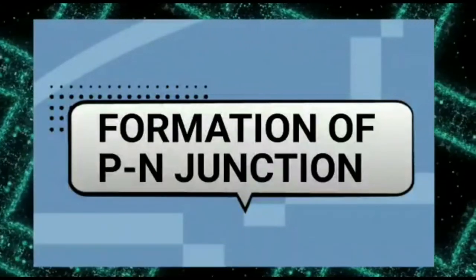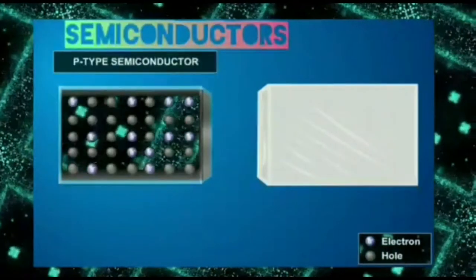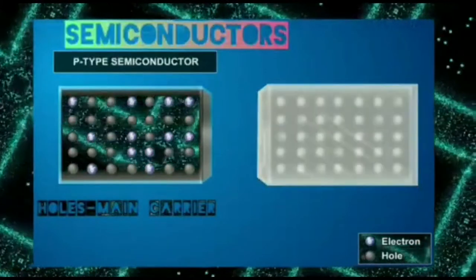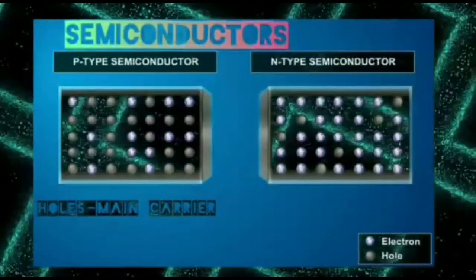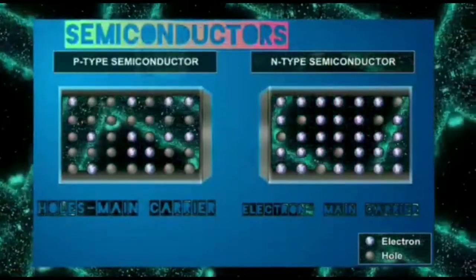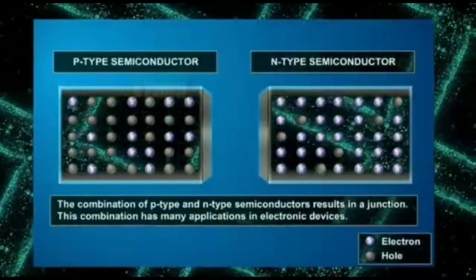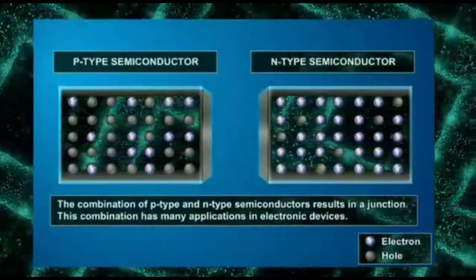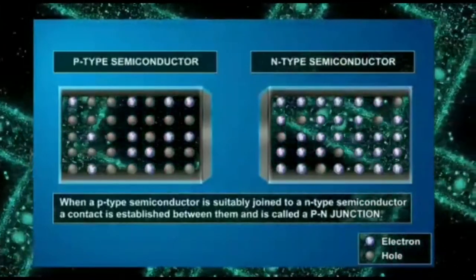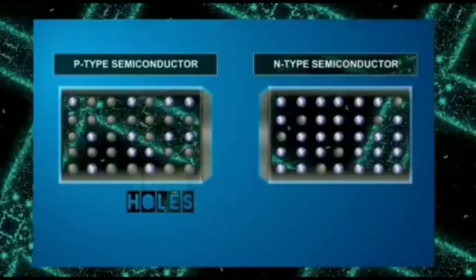Junction diode — formation of the PN junction: The p-type semiconductor has an excess number of holes, so holes are the majority carriers of charge in p-type semiconductors. Similarly, n-type semiconductors have an excess number of electrons, so electrons are the majority carriers in n-type semiconductors. The combination of p-type and n-type semiconductors results in a junction with many applications in electronic devices. When a p-type semiconductor is suitably joined to an n-type semiconductor, a contact is established called a p-n junction.